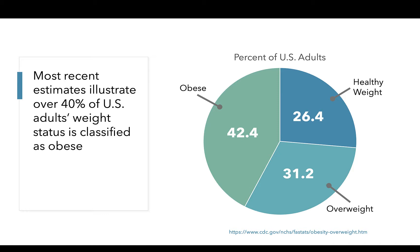As you can see in the pie chart on the right, approximately 26% of U.S. adults have a BMI classified as healthy or normal weight, approximately 31% have a BMI classified as overweight, and 42% have a BMI classified as obese.